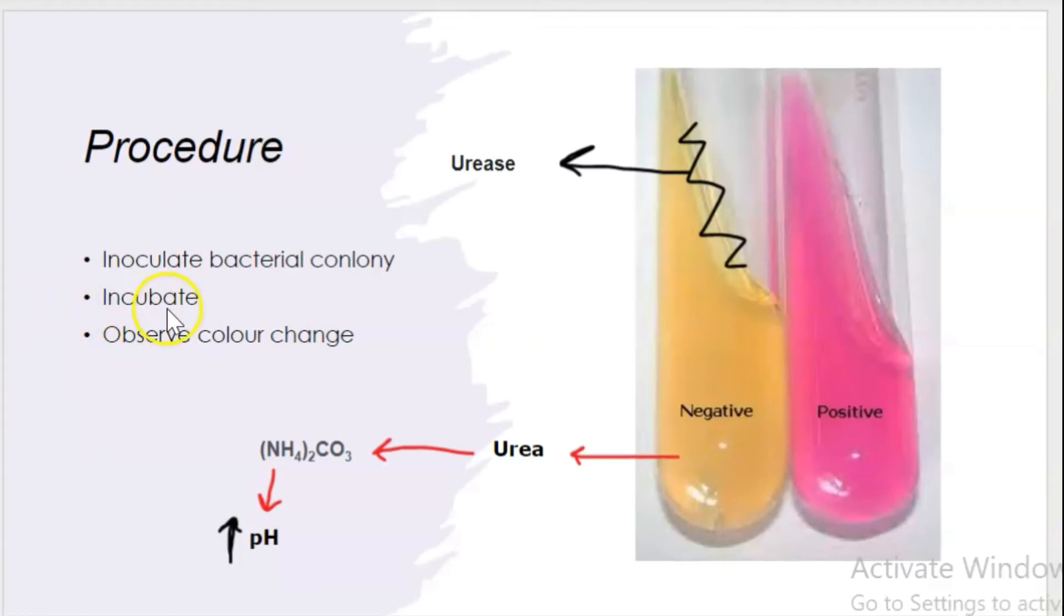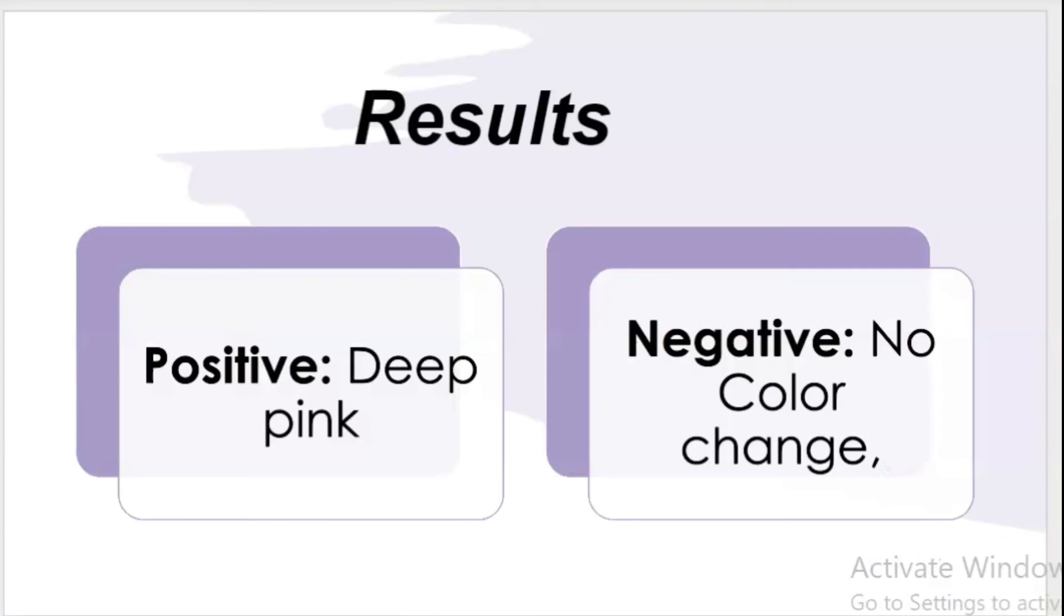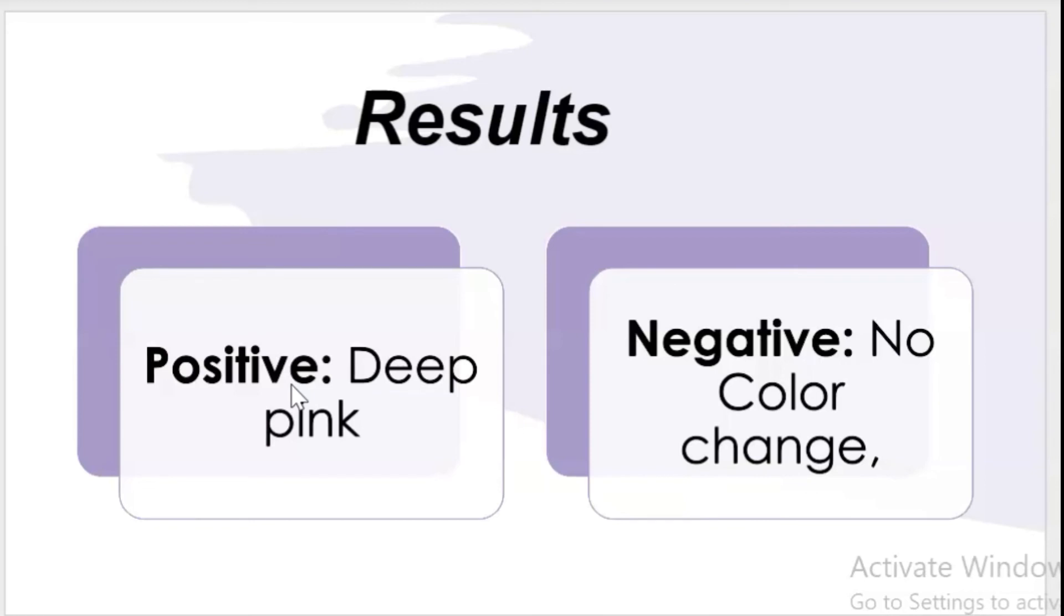After incubation, observe the color change. The results are: deep pink means the result is positive and the bacteria you inoculated have urease enzyme.